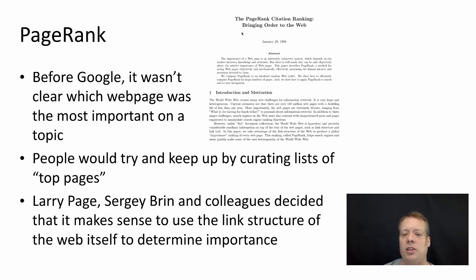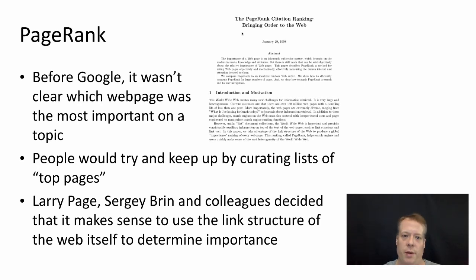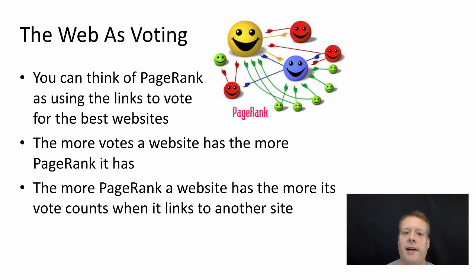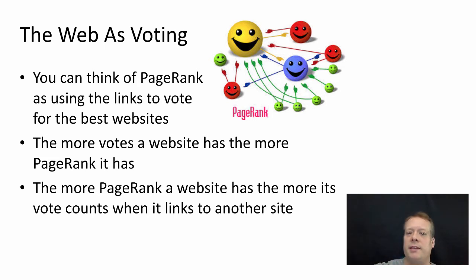And so Larry Page, Sergey Brin, and their colleagues decided that it makes a lot more sense to use the link structure of the web itself to help determine the importance of an individual page. This is their original paper — the PageRank Citation Ranking: Bringing Order to the Web. One way to think of PageRank is basically treating the web as voting — you can think of PageRank as using links to vote for the best website, as proxying links for votes for the best websites.